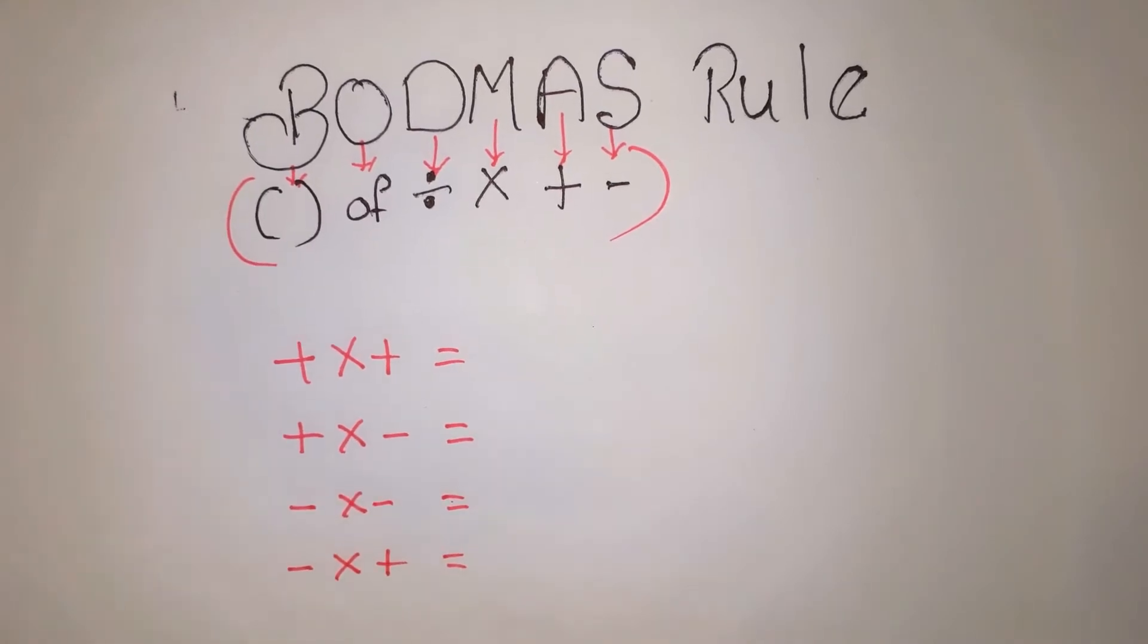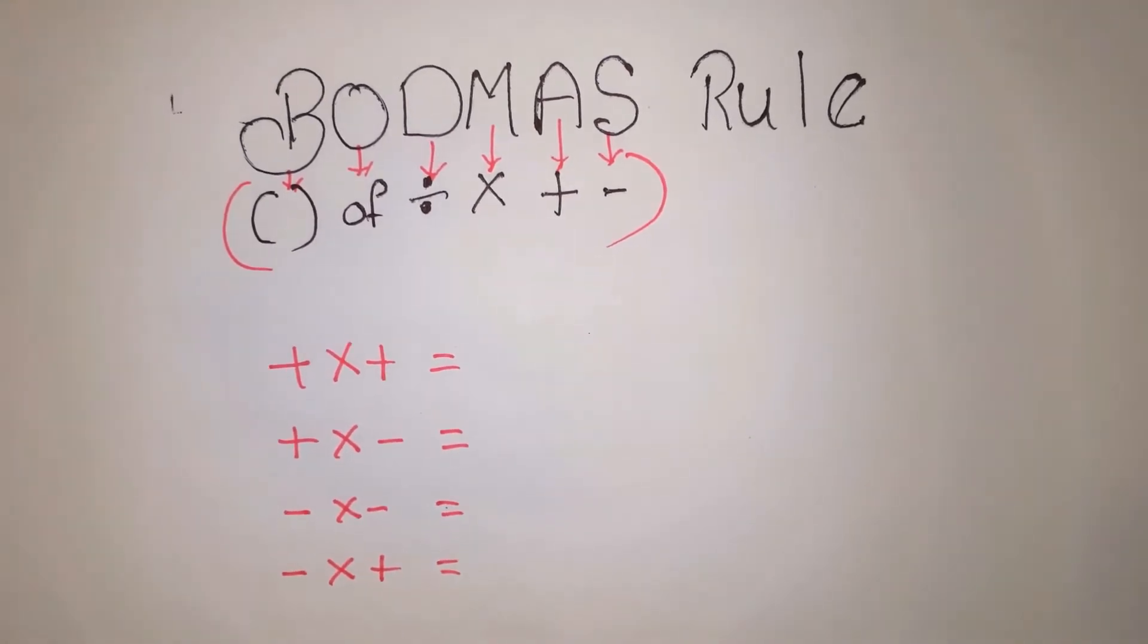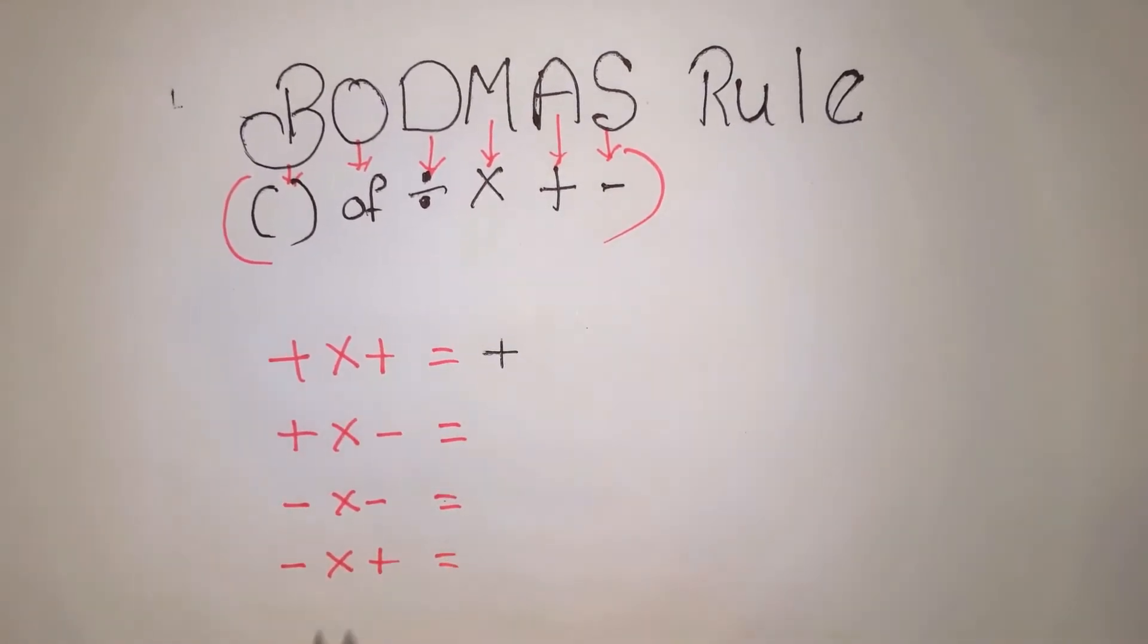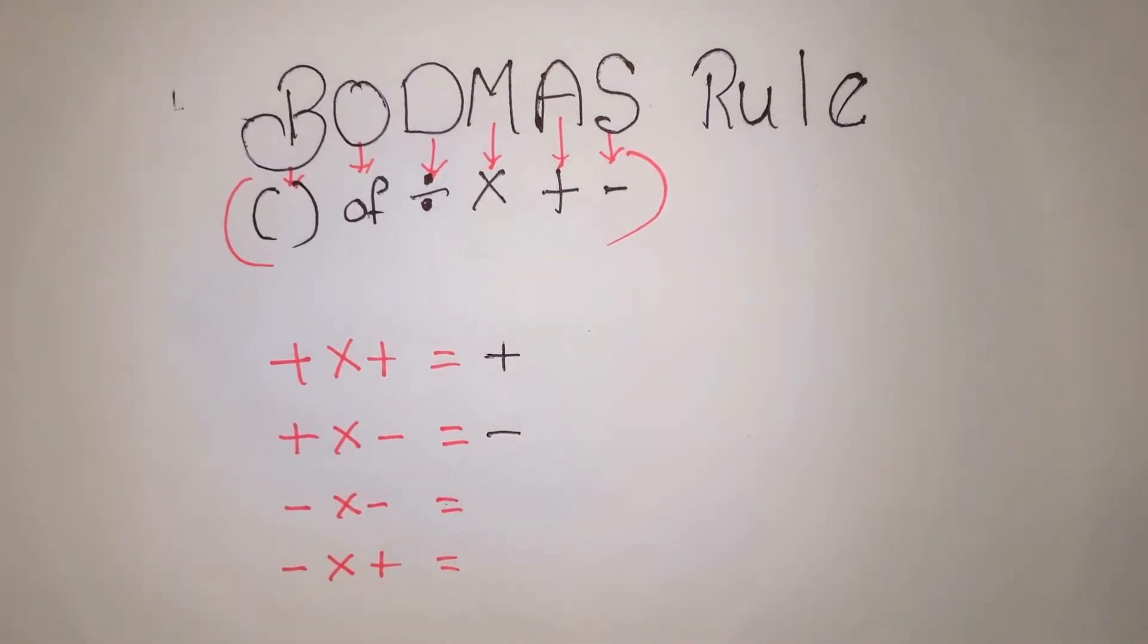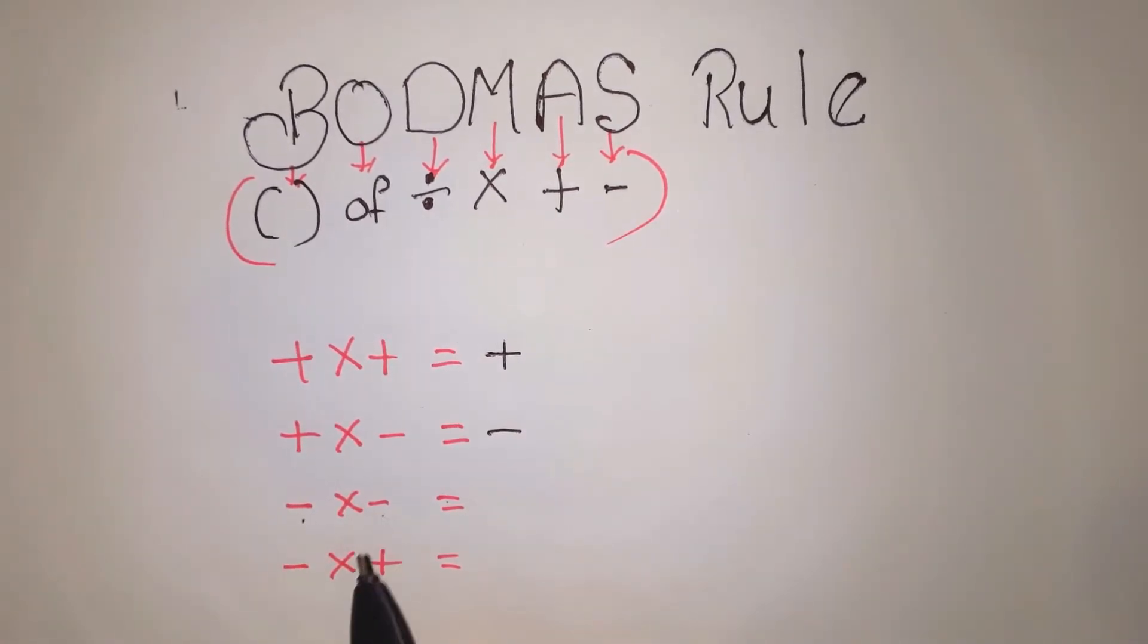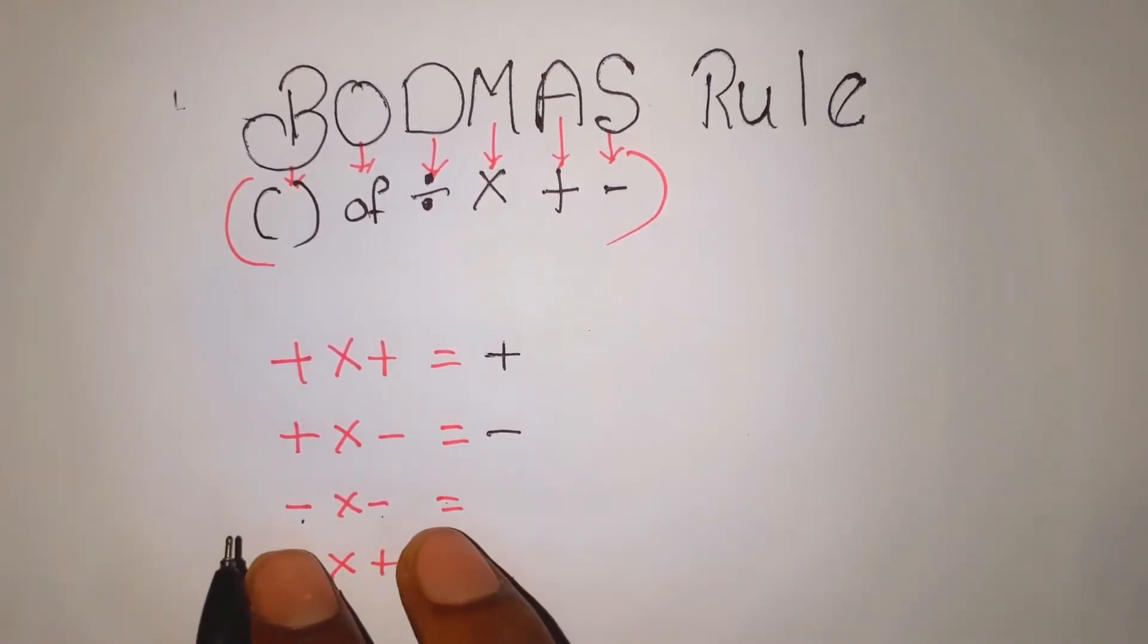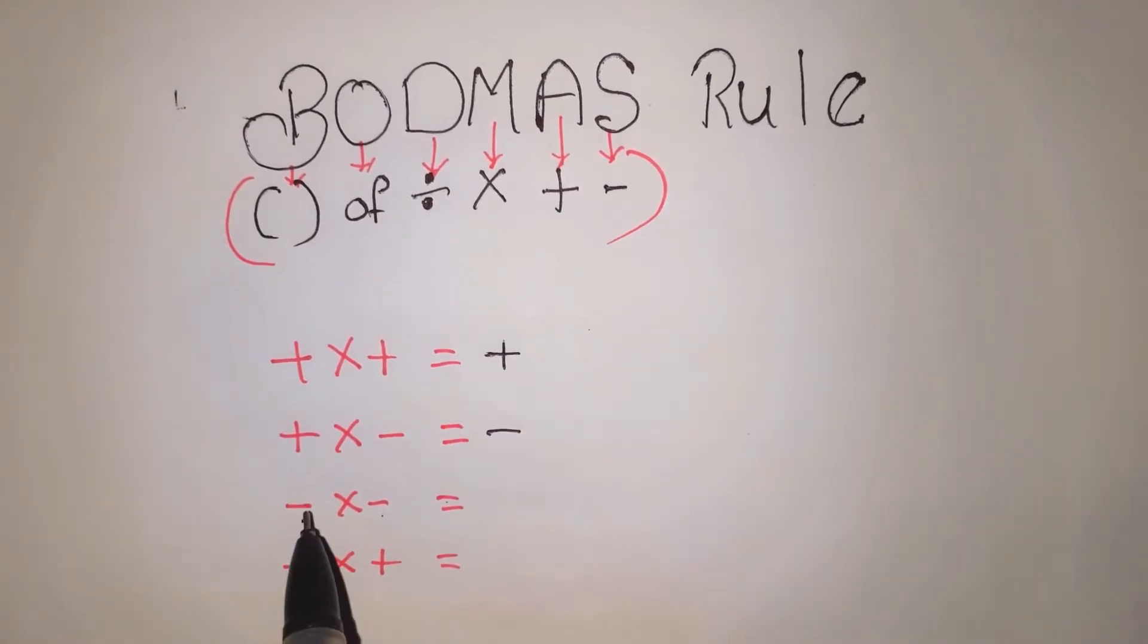I will show you the basic rule again. Plus into plus equals plus. Plus into minus equals minus. Minus into minus equals plus. This is the basic rule. Plus into minus - first the minus, then minus. Addition to minus.